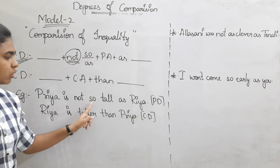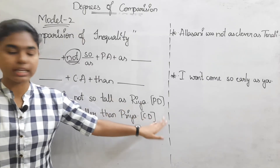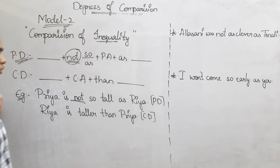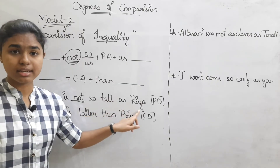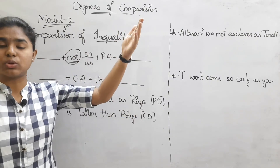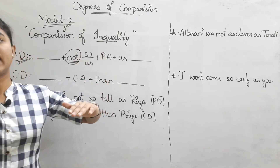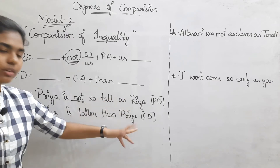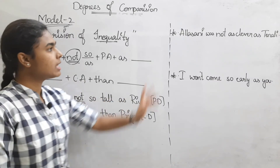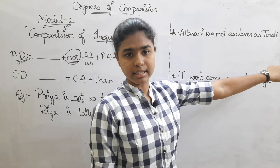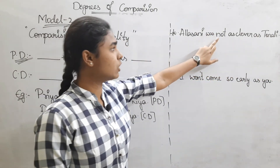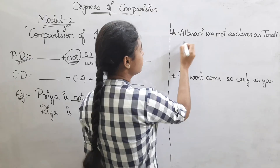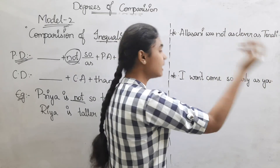Example: Priya is not so tall as Rhea. This is the positive degree, model 2 — comparison of inequality. This means Rhea is taller than Priya. Next: Alasani was not as clever as Tenali. This is also a model 2 positive degree sentence. The comparative degree transformation makes Tenali the subject.